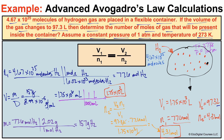So to summarize: we originally had 4.67 times 10 to the 25th molecules in this flexible container. The initial volume was 1.75 times 10 to the third liters and the initial number of moles was 77.6. The volume decreased from 1,750 liters to 97.3 liters, and correspondingly the number of moles of hydrogen gas decreased from 77.6 moles to 4.31 moles. That's an advanced Avogadro's law calculation. If you like what you see, click subscribe and feel free to leave comments or questions below.